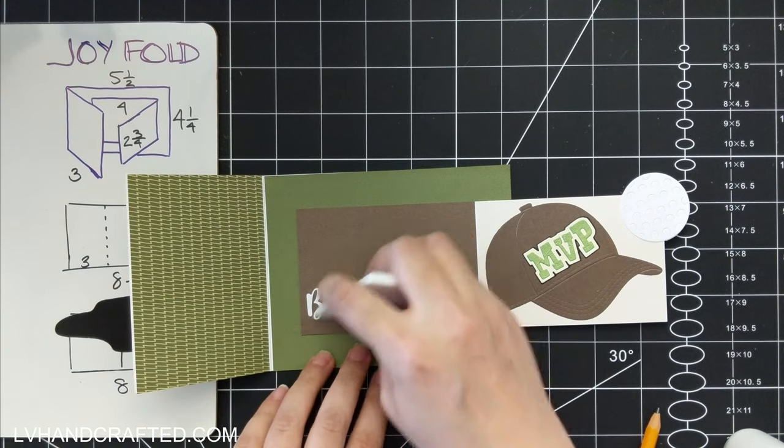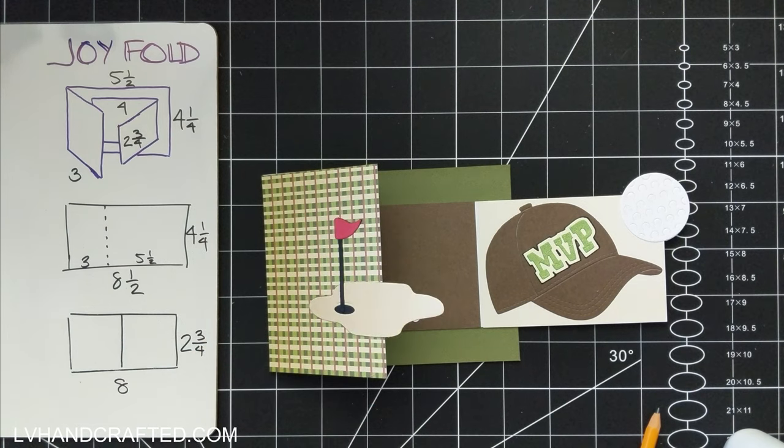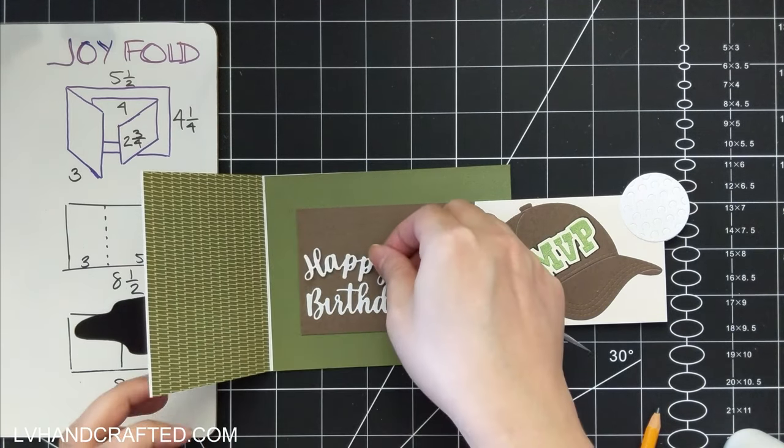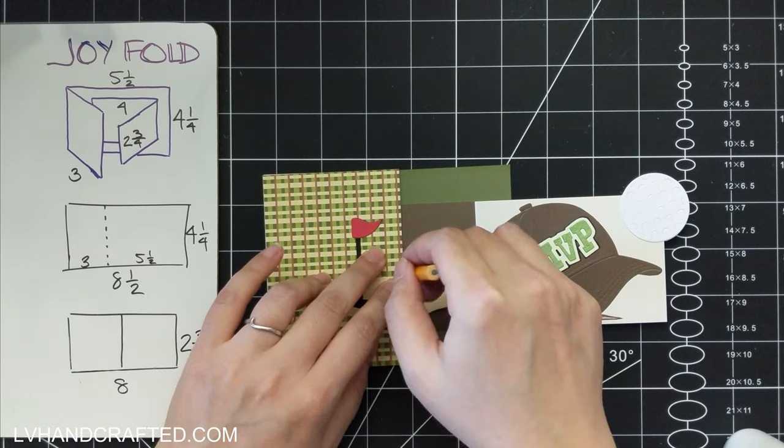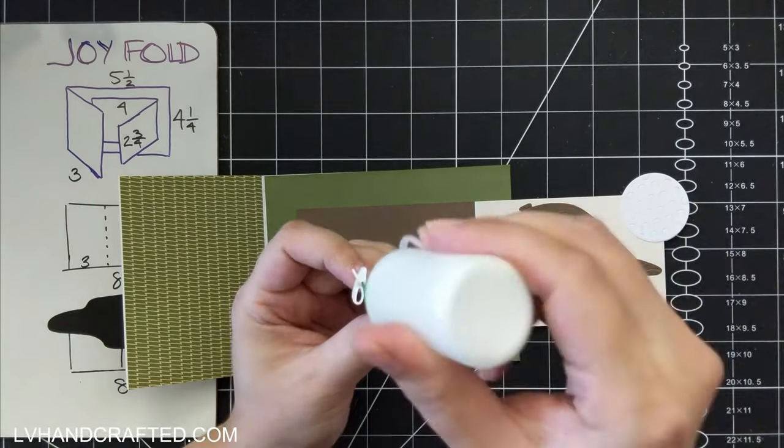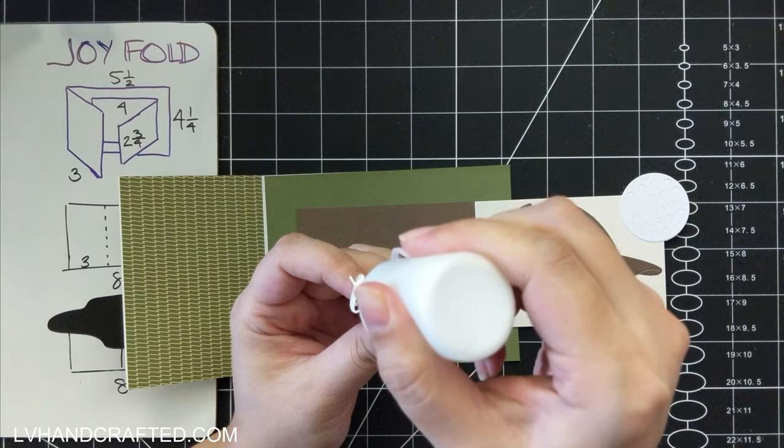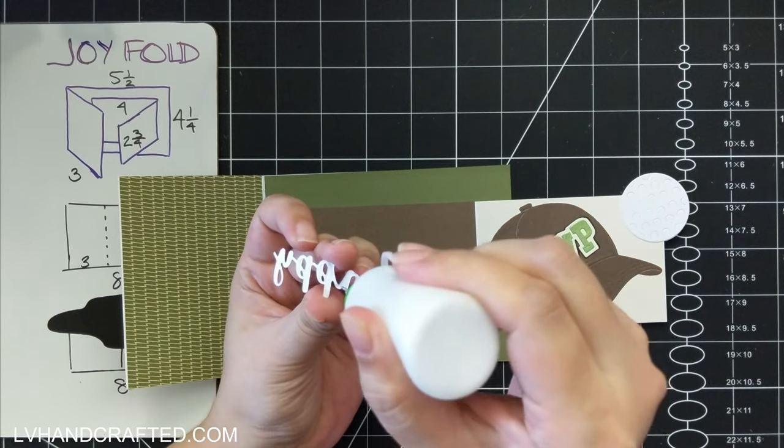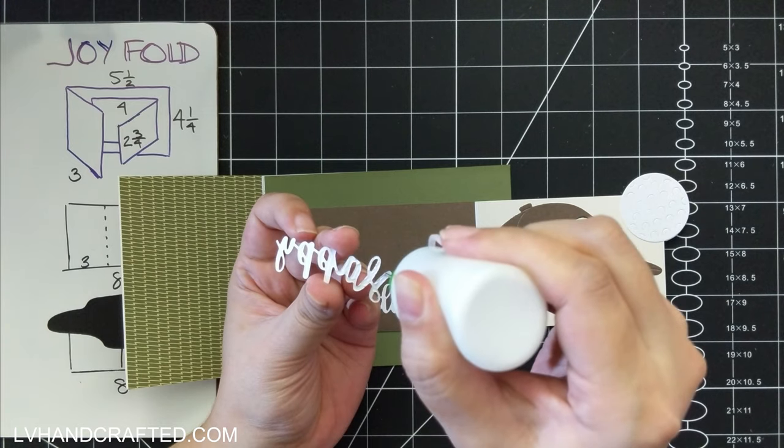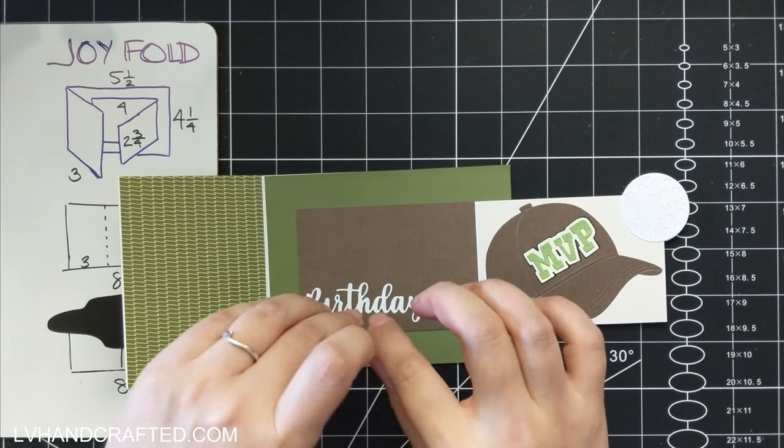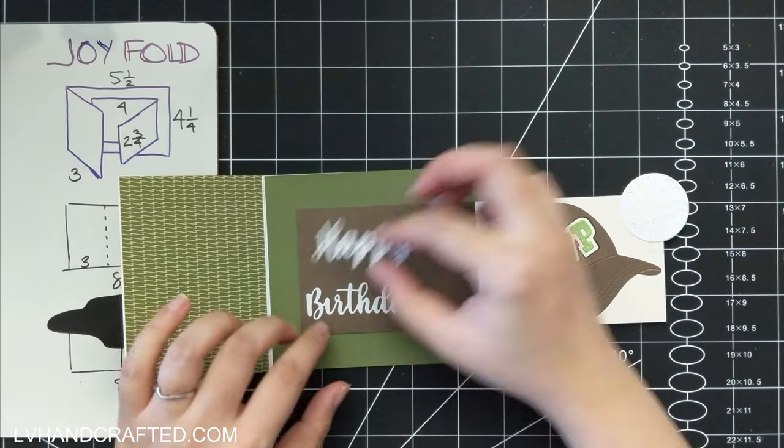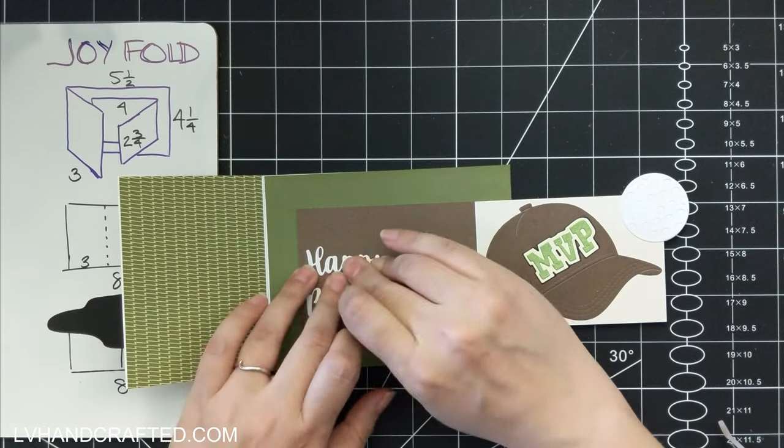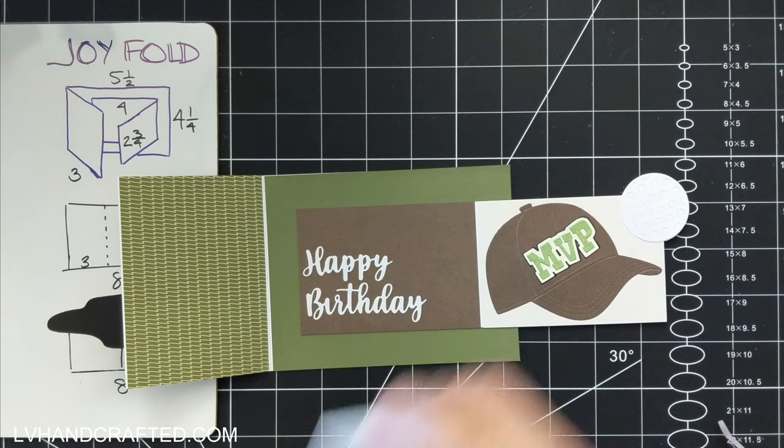And what I did was give myself a couple of pencil marks so that I know where that sort of putting green area is, so that my sentiment stays completely hidden. That way as you're opening these different flaps, you're revealing more and more of the scene and sentiment and images. And I did the same thing right above the birthday sentiment so that I can make sure where I'm placing the word happy, it's going to stay hidden behind that leftmost panel there.